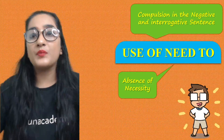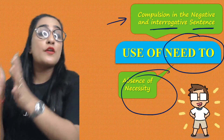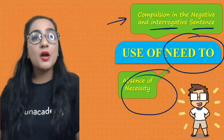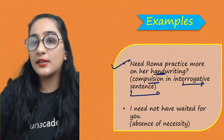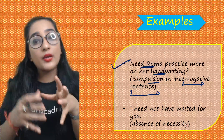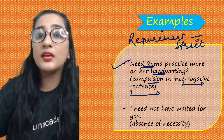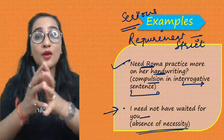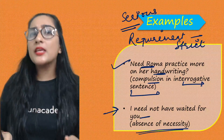NEED TO is used for compulsion in negative and interrogative sentences, and also to express absence of necessity. Example: 'Need Roma practice more on her handwriting?' — compulsion in interrogative form. 'I need not have waited for you' — absence of necessity; there was no requirement of waiting. Use 'need to' when the requirement is very strict or serious.